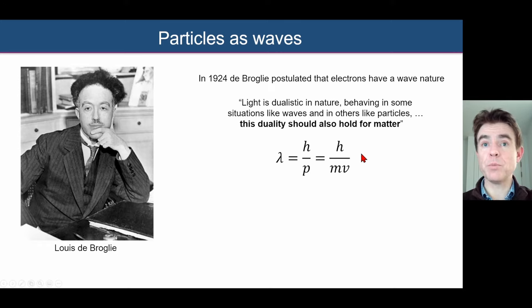This was his very simple equation. The wavelength of an electron, lambda, is given by a constant, Planck's constant, divided by the momentum of the electron, which is its mass times its velocity.